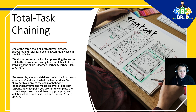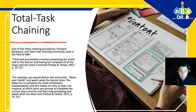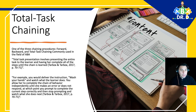For example, you would deliver the instruction 'wash your hands' and watch what the learner does. You allow her to complete the chain of behavior independently until she makes an error or does not respond, at which point you prompt her to complete the correct step and then stop prompting and watch what she does next. Tarbox and Tarbox — a phenomenal book.